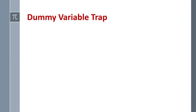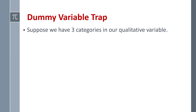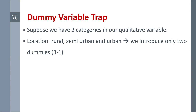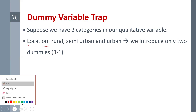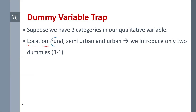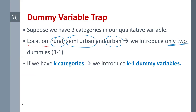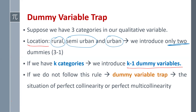Now, what is the dummy variable trap? Suppose we have 3 categories in our qualitative variable — location — with categories: rural, semi-urban, and urban. Therefore we are going to introduce only 2 dummy variables. The rule is: when we have k categories, we introduce k minus 1 dummy variables. If we do not follow this rule, we have the problem of the dummy variable trap.